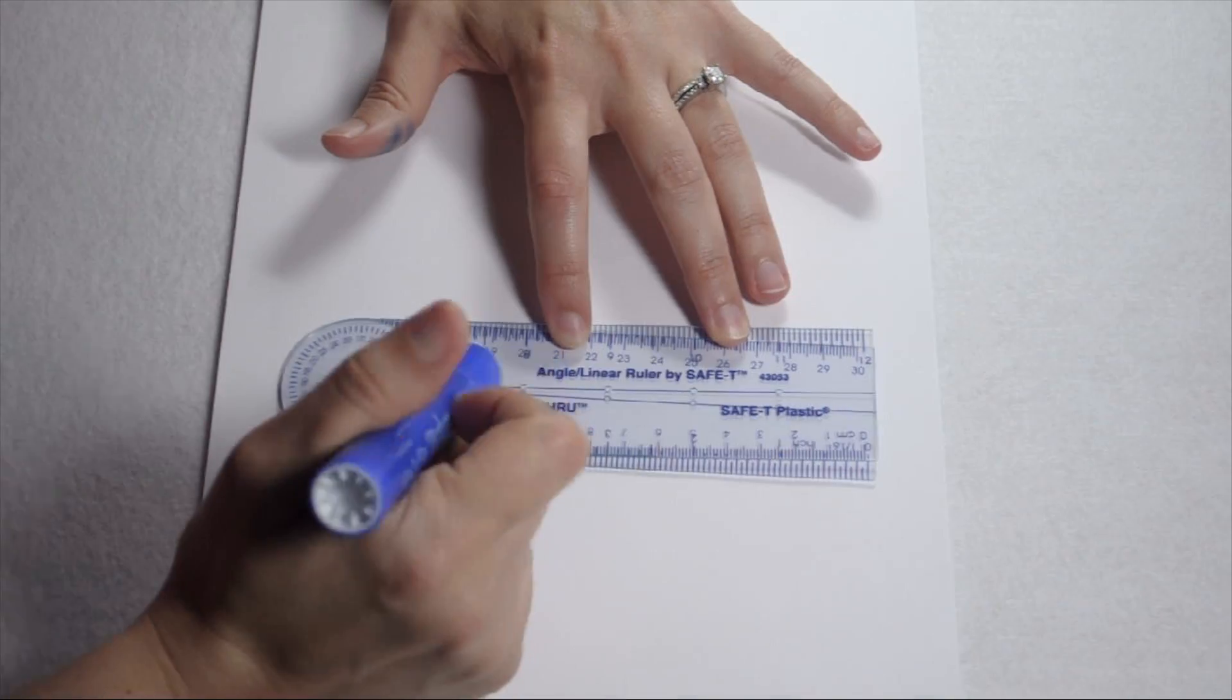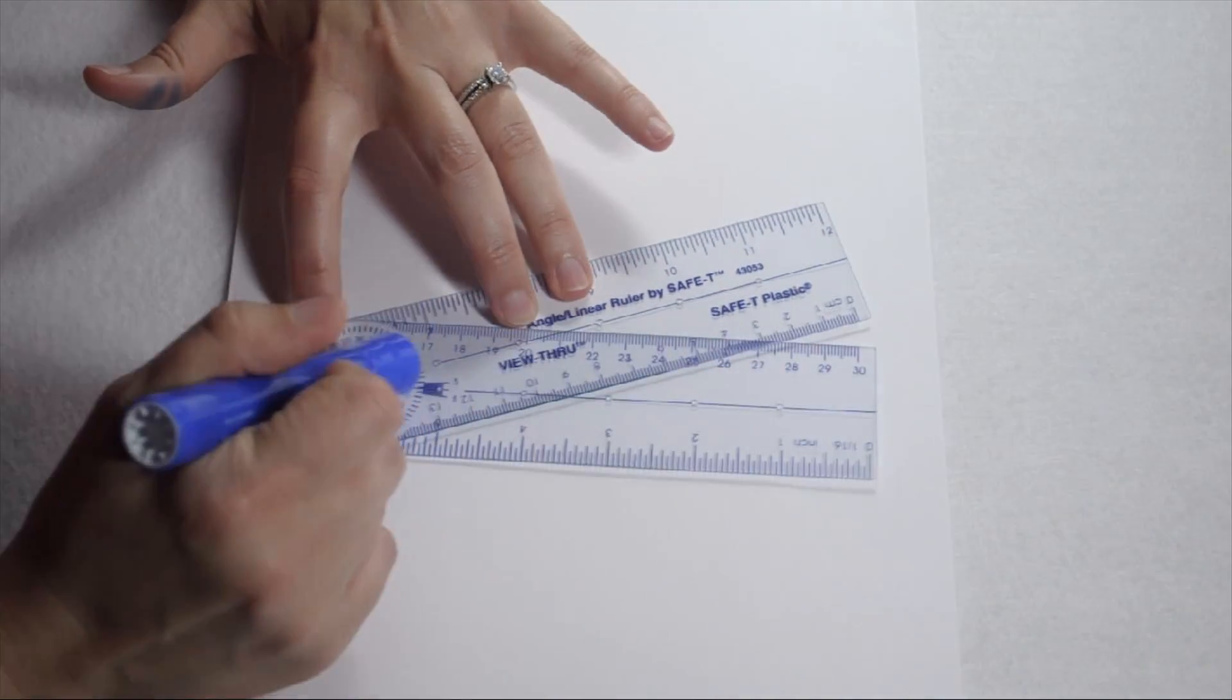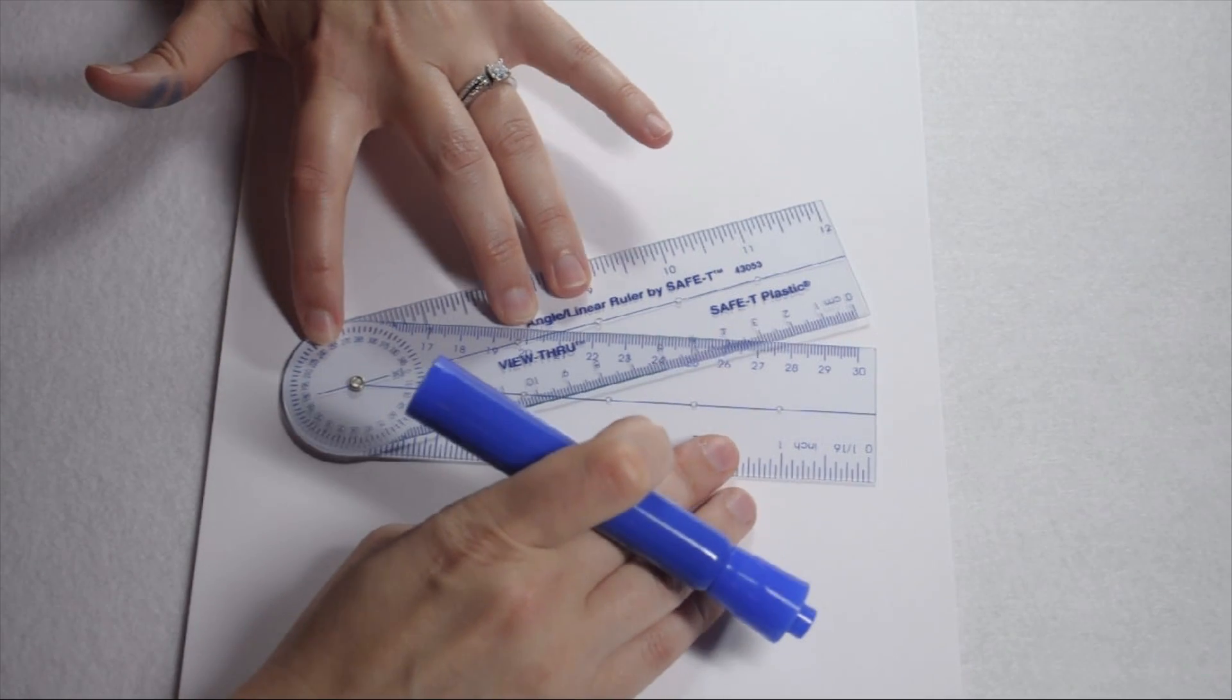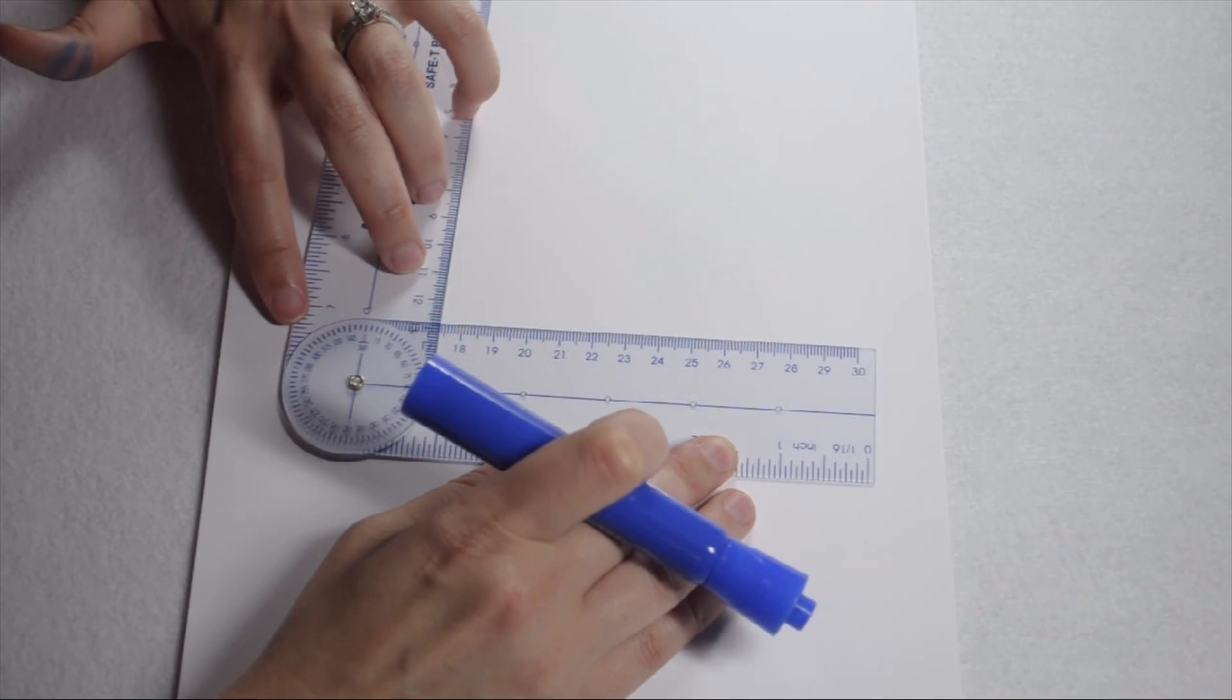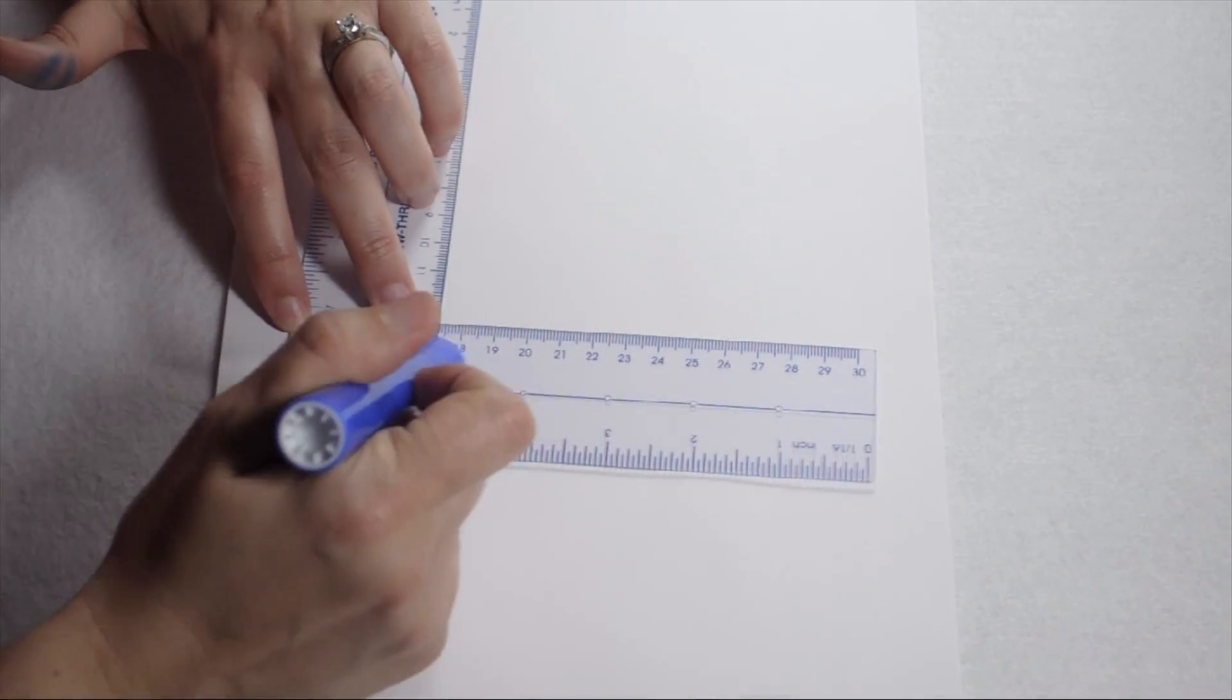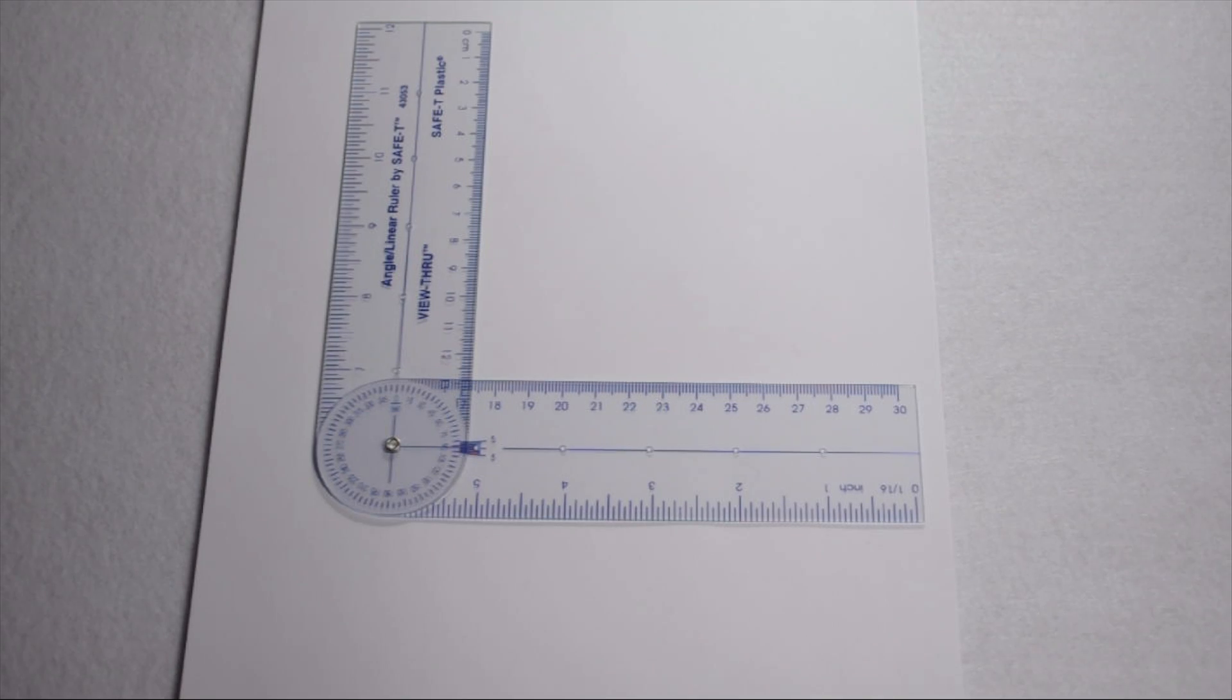Then I'm simply going to rotate my top leg. As I do, I can see my degrees increasing on the dial. I'm going to keep turning until my 90 degrees lines up with the blue line on my bottom leg. Now my angle ruler is showing me a 90 degree angle.